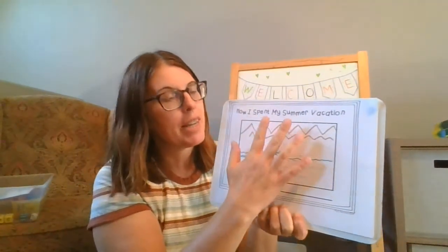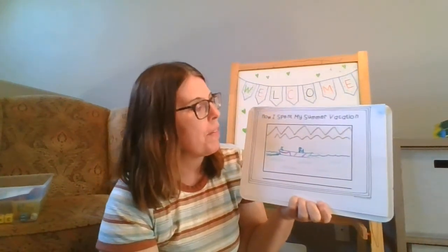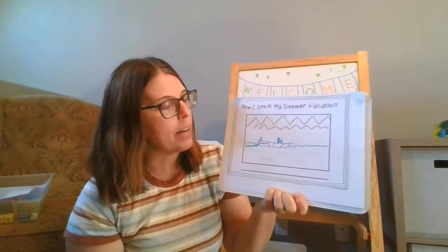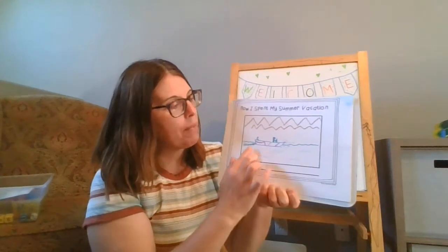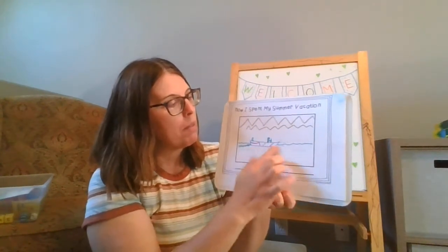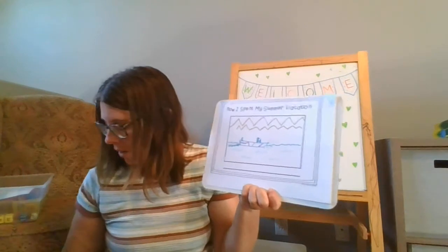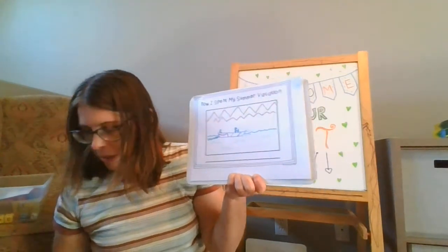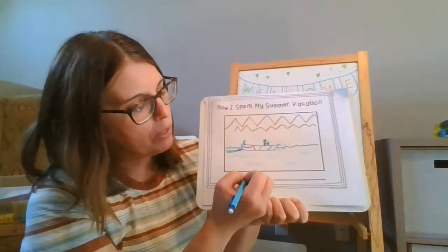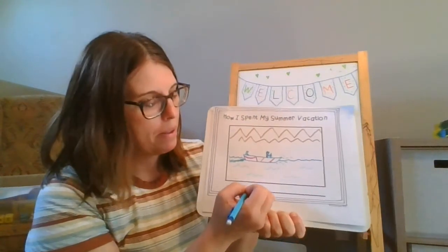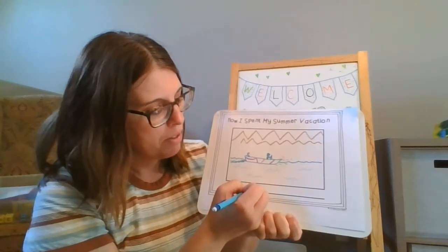I started with my idea and drew my picture, and now I'm going to think about what I could add. There are different things I could do - I could write 'I went on my boat,' a whole sentence, or if I'm just starting to sound out words I could write 'boat.' When you do your writing, I want you to use a pencil so you can erase. What letter do you think 'boat' starts with? Boat starts with the B.